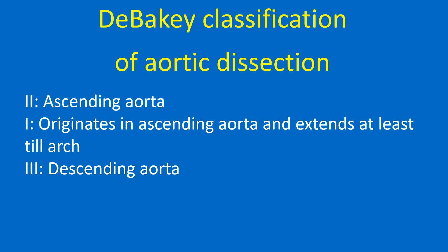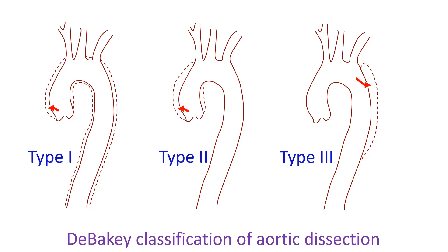DeBakey classification of aortic dissection: Type 1 originates in the ascending aorta and extends at least to the arch. Type 2 involves only the ascending aorta. Type 3 involves the descending aorta. A diagrammatic representation illustrates these DeBakey classification types 1, 2, and 3.